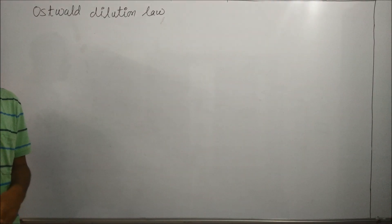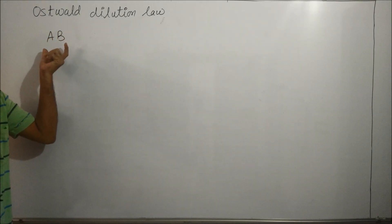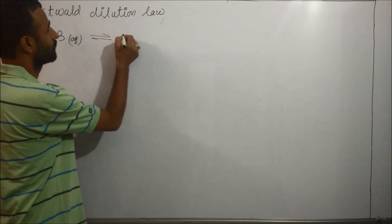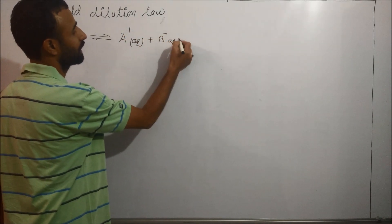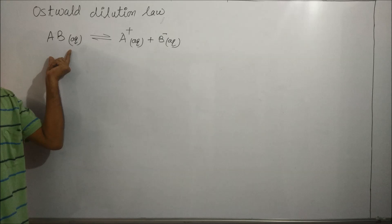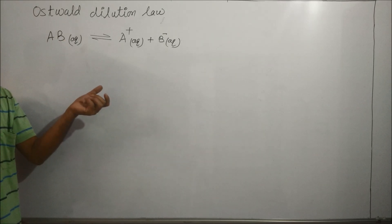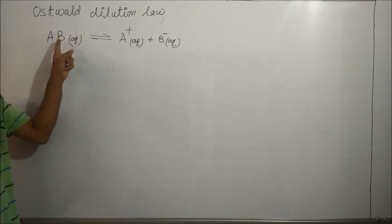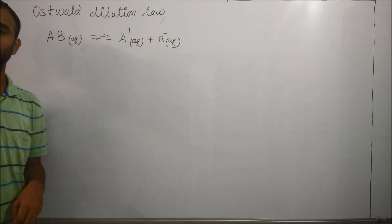Ostwald's Dilution Law. Let us take an example of a salt in aqueous solution which is in equilibrium with A positive and B negative. This means it is a weak salt, weak acid or weak base, because its unionized form and ionized form are in equilibrium.